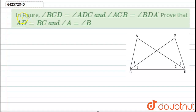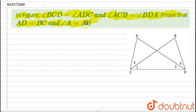Hello student, let's start with the question. Here we have given: in the figure, angle BCD is equal to angle ADC and angle ACB is equal to angle BDA. Then prove that AD is equal to BC and angle A is equal to angle B. To prove this, we first have to prove that triangle ACD is congruent to triangle BDC.